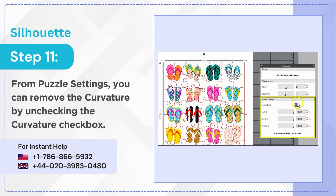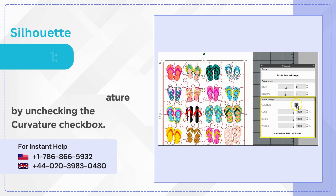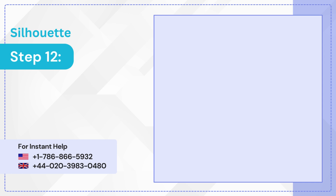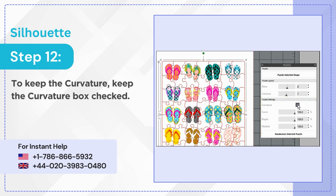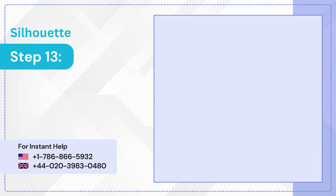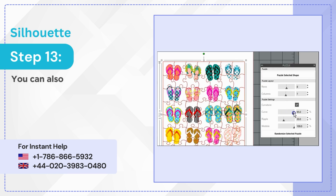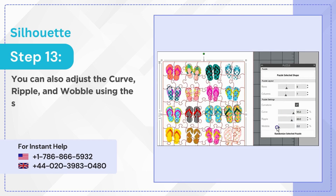Step 12: To keep the curvature, keep the curvature box checked. Step 13: You can also adjust the curve ripple and wobble using the sliders.